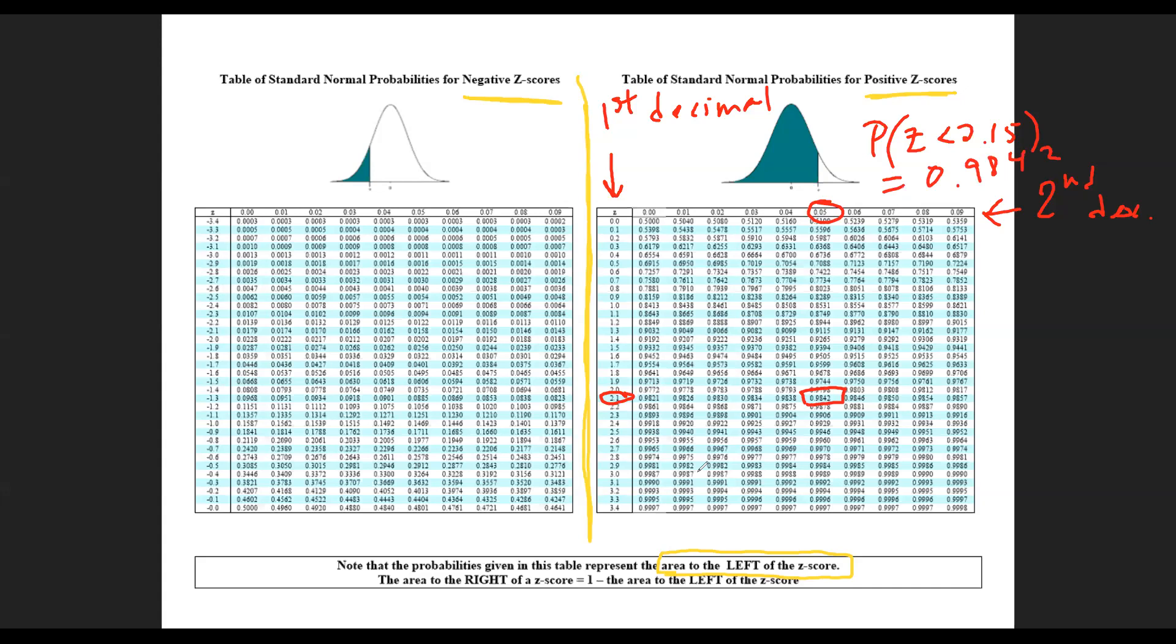Now if I wanted the area to the right, then I'll follow this little hint down here at the bottom and I just take the complement value. So now that we're familiar with the Z table, let's move on to our example.